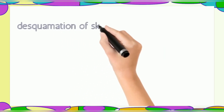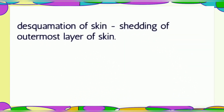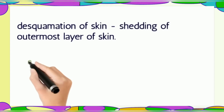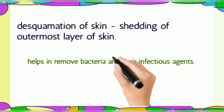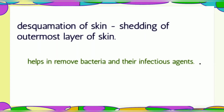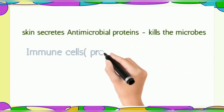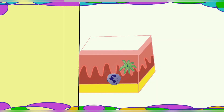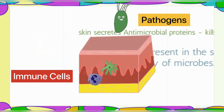The outer surface of the skin has dead cells. These epithelial cells continuously shed — a process called desquamation or shedding of skin — which helps to remove organisms. Skin cells also secrete antimicrobial proteins that kill microorganisms. Immune cells are also present in the skin layers to detect and respond to any foreign bodies.